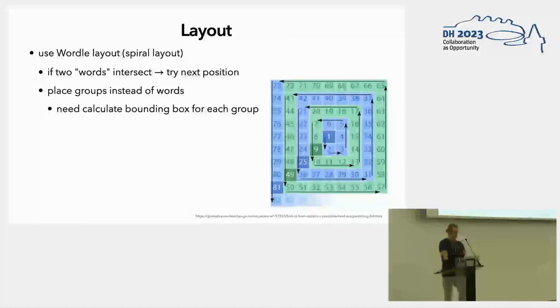So layout-wise we used nothing special. Only the Wordle algorithm. So it's using a spiral layout. And the Wordle algorithm goes like you have these spirals and you pick places in the spiral. And you just place words. And if any two words intersect, you just check the next place. And that's basically it. And the only difference to the original layout is that we don't place words specifically. We just place the groups.